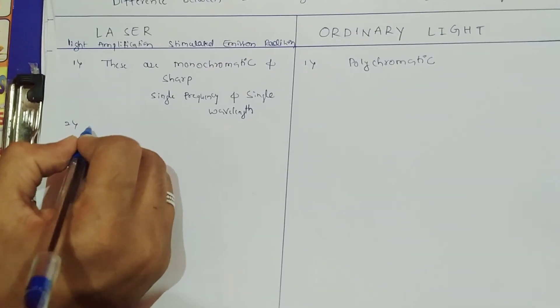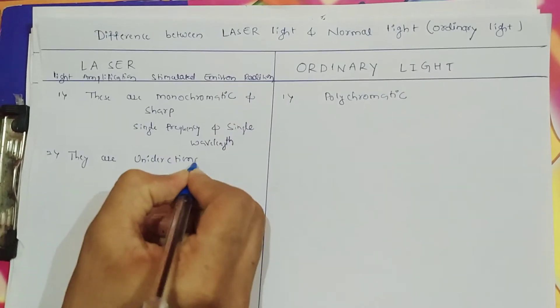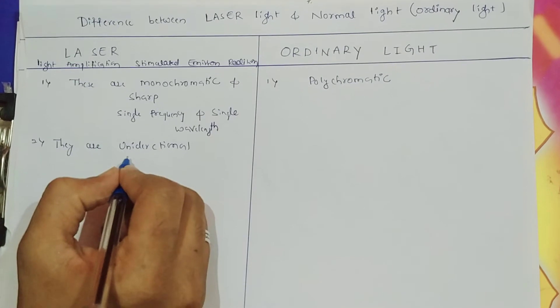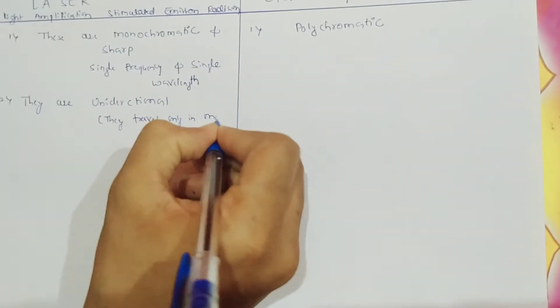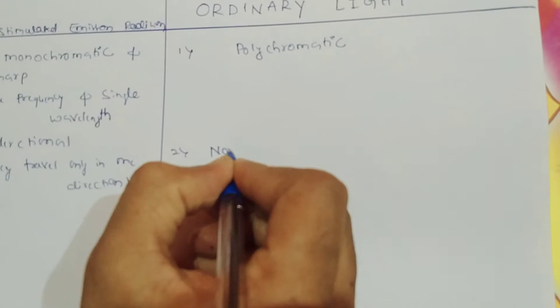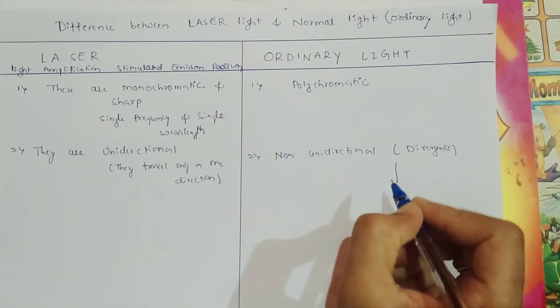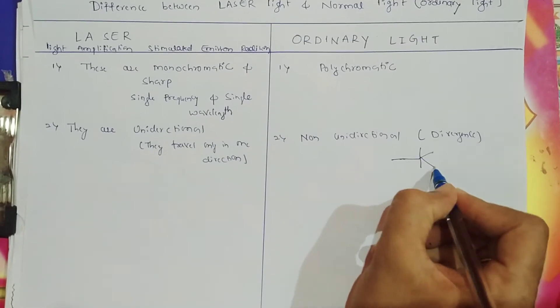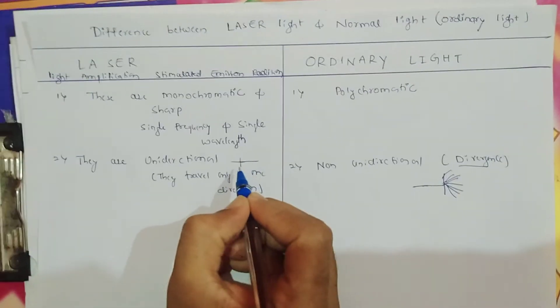The second property of laser is that they are unidirectional. Unidirectional means they travel only in one direction. In the case of ordinary light, they are non-unidirectional — they show a divergence property. Divergence means that when light comes out from a bulb, it will diverge in all directions. But laser travels in a single direction, so that is called unidirectional.